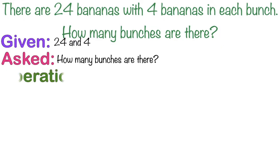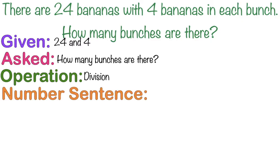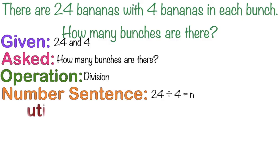What operation are we going to use? Fantastic! It's division. How about the number sentence? The number sentence is 24 divided by 4 equals n. Since we have 24 bananas in total, and the divisor is 4 because we have 4 bananas in each bunch.